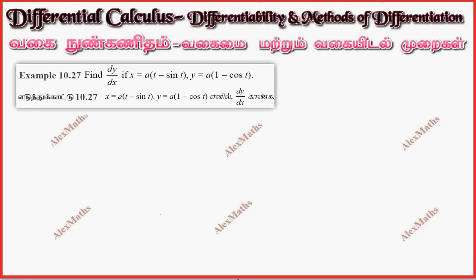Hi students, this is Alex here. Example 10.27. Find dy by dx in parametric form: x equals a times (t minus sin t), y equals a times (1 minus cos t).